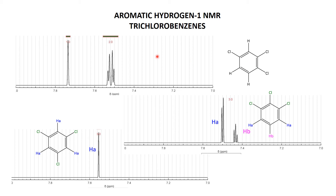So this last spectrum must be the 1,2,4-trichlorobenzene. Let's look at the hydrogens. This one here is a hydrogen stuck between two chlorine atoms, so it'll be quite nicely downfield. These other two look equivalent at first sight because both are adjacent to a chlorine, except one is between a chlorine and a chlorine, while the other is only adjacent to one chlorine. So these are actually different protons — just slightly different, but they are different.